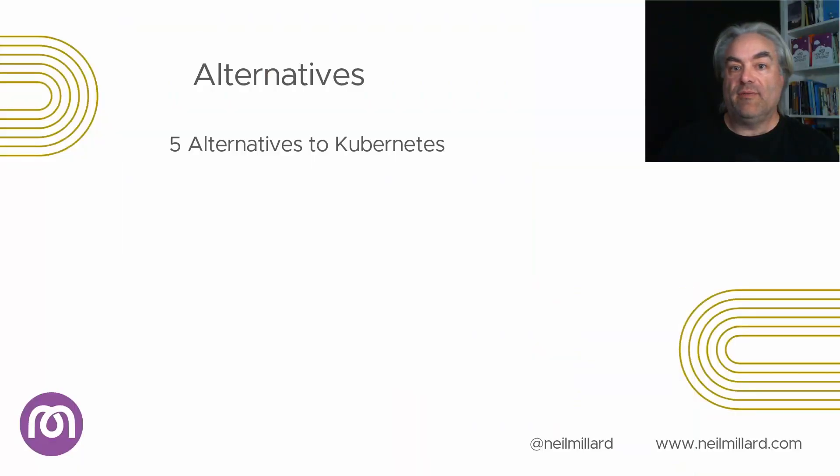So for us to have an alternative to Kubernetes, it must be able to give us ingress gateways, a scheduler of some sort, and a controller so we can talk to the system to instruct what it's going to do. We must also have nodes, whether it's looking after them or we're looking after them — this is where the work actually gets done. So with no further ado, here are five alternatives to Kubernetes.